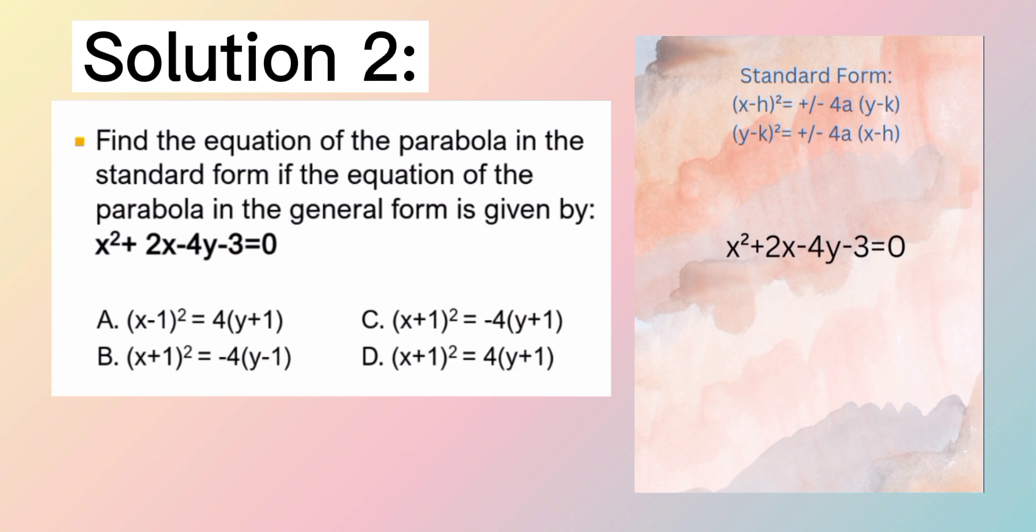Pareho lang din naman pagdating sa y minus k squared is equal to plus or minus 4a times x minus h. X is horizontal. Kapag horizontal, opens to the left and opens to the right. Opens to the right, goes to positive. Diba? Ganun yung x-axis natin. Going far away from the origin, positive. To the right. And to the left naman, mas nagigis siyang negative. Ganun din. Yun na lang yung gawin nating reference sa pag-recall ng positive or negative signs na ating parabola. O, medyo malinaw. Kahit pa paano. Going back to our problem.